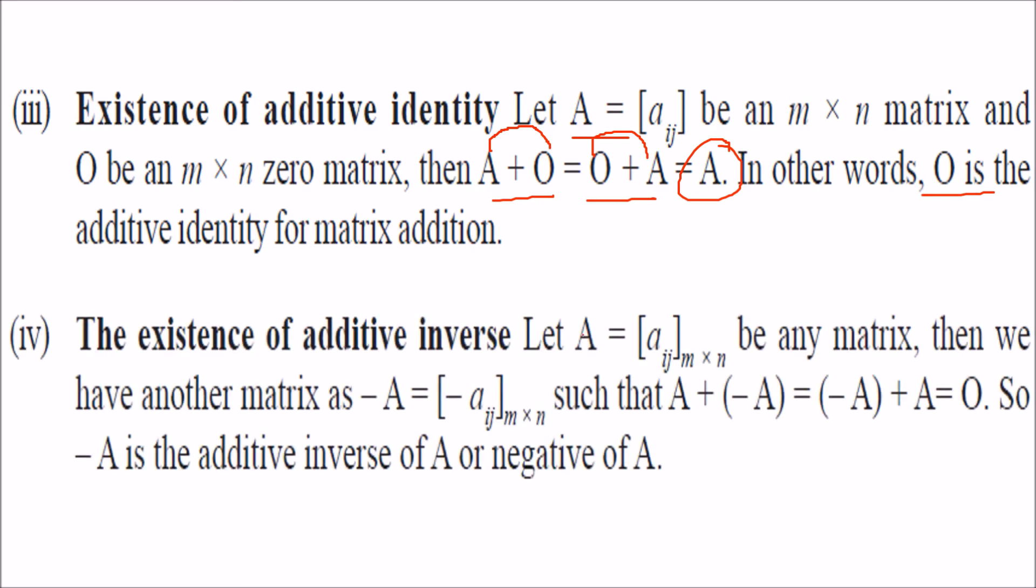Additive inverse: additive inverse means if you add the matrix with some matrix you get zero, then this matrix is nothing but the additive inverse of this matrix. So minus A is the additive inverse of A, and A is the additive inverse of minus A. This goes vice versa.